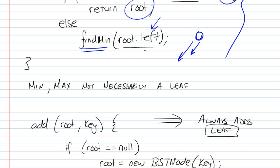The maximum would be the exact same thing except you're going to be looking at the right children and going to the right subtree every time until you reach the very end, the very last leaf.